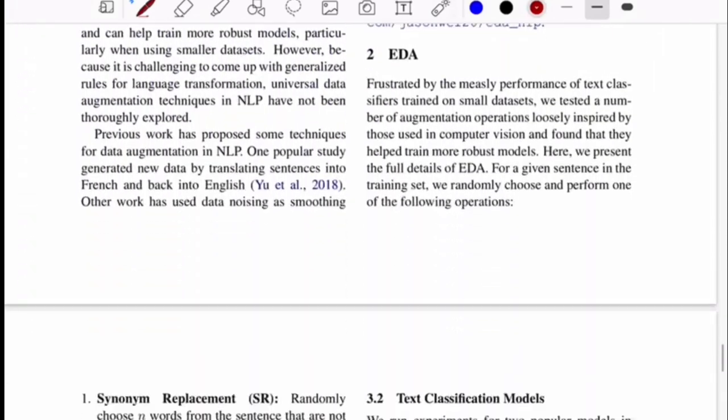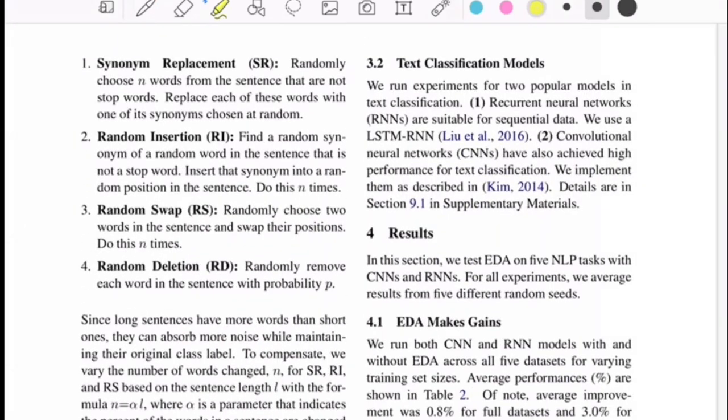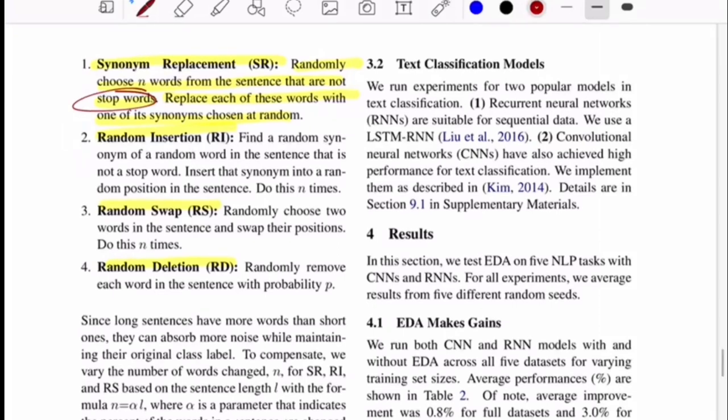Let's see what the main algorithm is. First one is randomly choose n words from a sentence that are not stop words and replace each of these words with one of its synonyms chosen at random. Stop words are some unique set of words that are commonly used across any language. You remove those stop words by maintaining a list of commonly used words. Whenever a sentence comes in as input, you mark each word that is a stop word and prune it out from the full sentence.